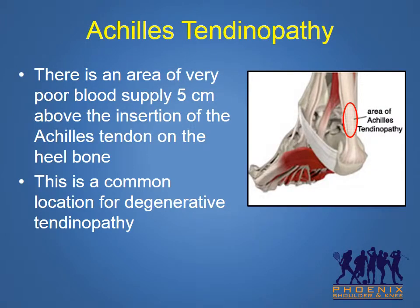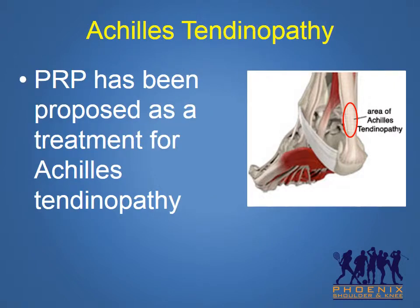In the ankle, there is an area of very poor blood supply, 5 centimeters above the insertion of the Achilles tendon on the heel bone. As shown in the image on the right, this is a common location for degenerative changes of the Achilles tendon. PRP has been proposed as a treatment for Achilles tendinopathy.